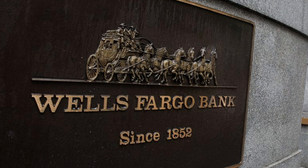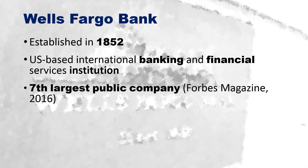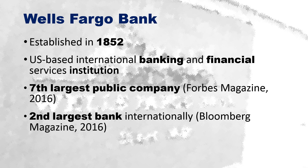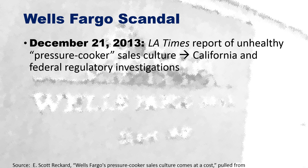Now let's move on to Wells Fargo, which has also been in the news. Wells Fargo was established in 1852 — it's an old company and a US-based international banking and financial services institution. According to Forbes magazine in 2016, it was the seventh largest public company, and according to Bloomberg it was the second largest bank internationally. Between 2007 and 2016, their CEO was John Stumpf, who took home an annual salary of $19 million as reported in 2015.